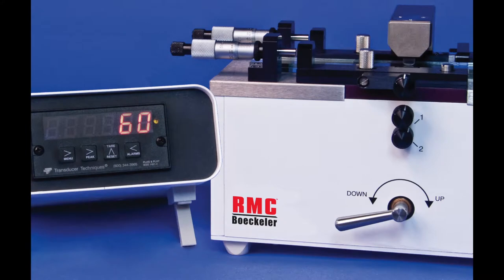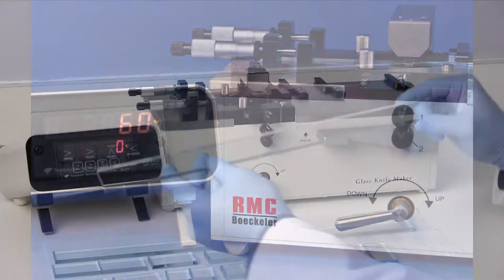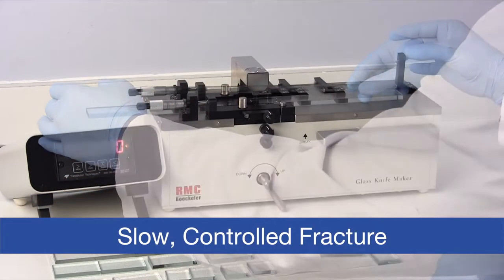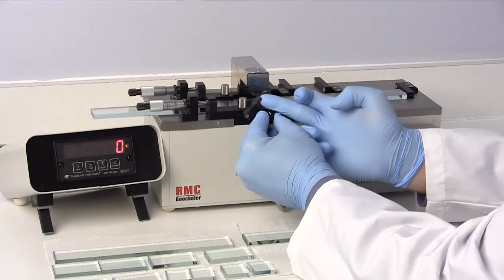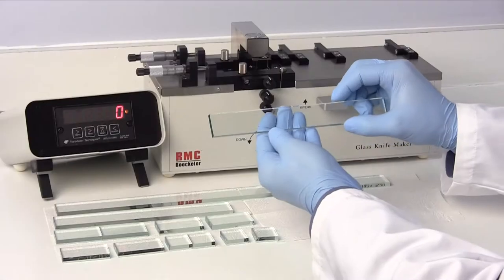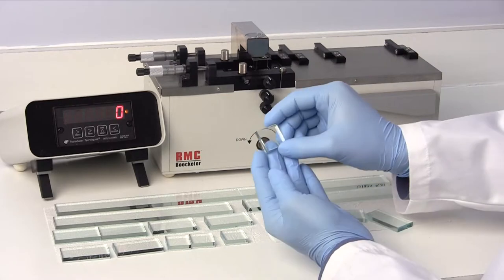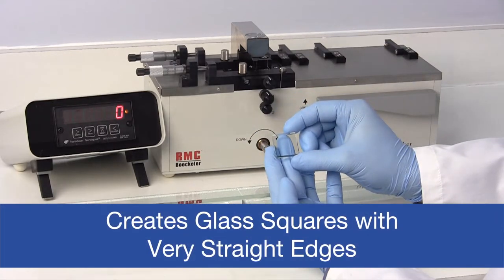The RMZ Beckler GKM2 glass knife maker creates optimum knife edges through the balance break method. A glass strip is scored at half and progressively broken into smaller lengths, ultimately creating 25mm glass squares with very straight edges.